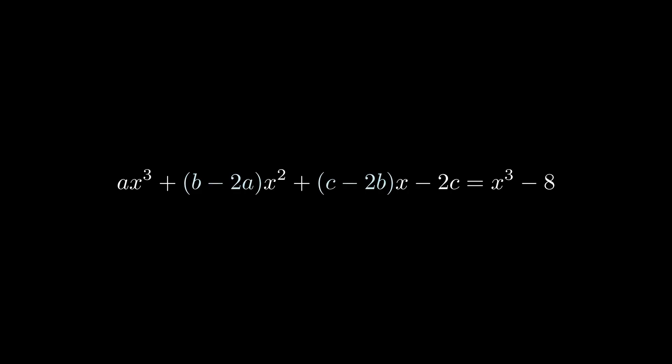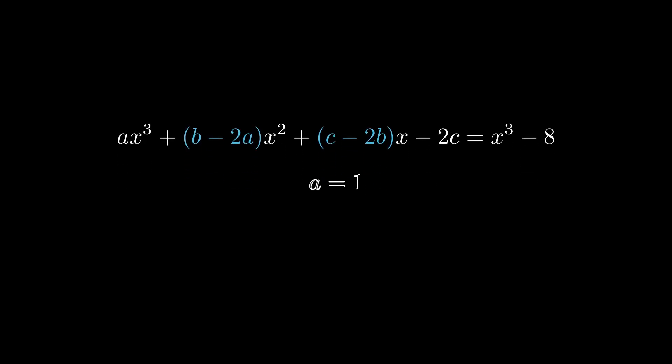For both sides to be equal, the coefficients of x squared and x must be 0. From this we get a equals 1, b equals 2, and c equals 4.